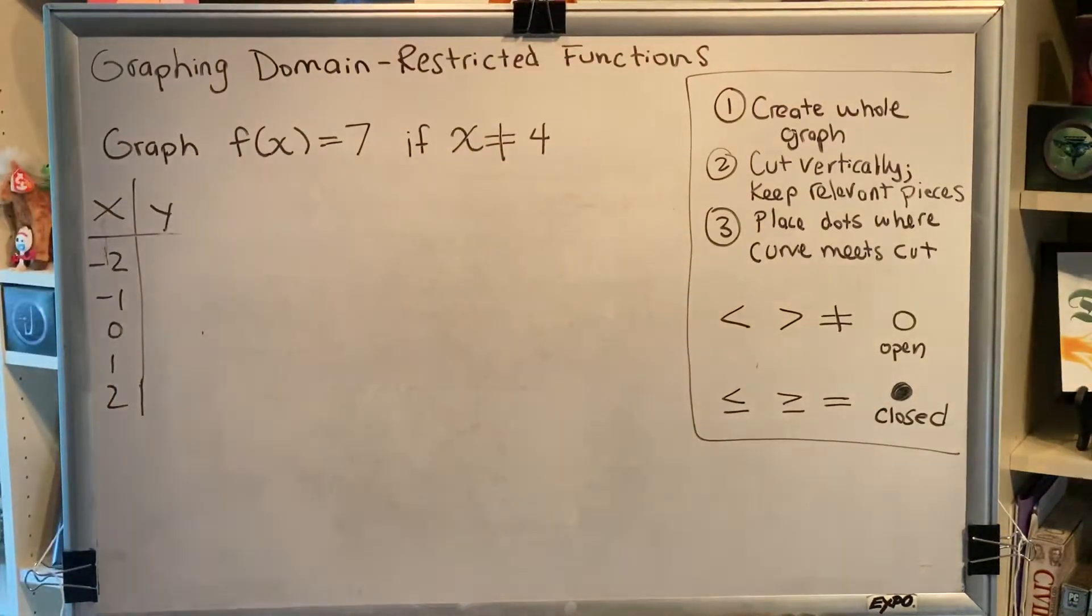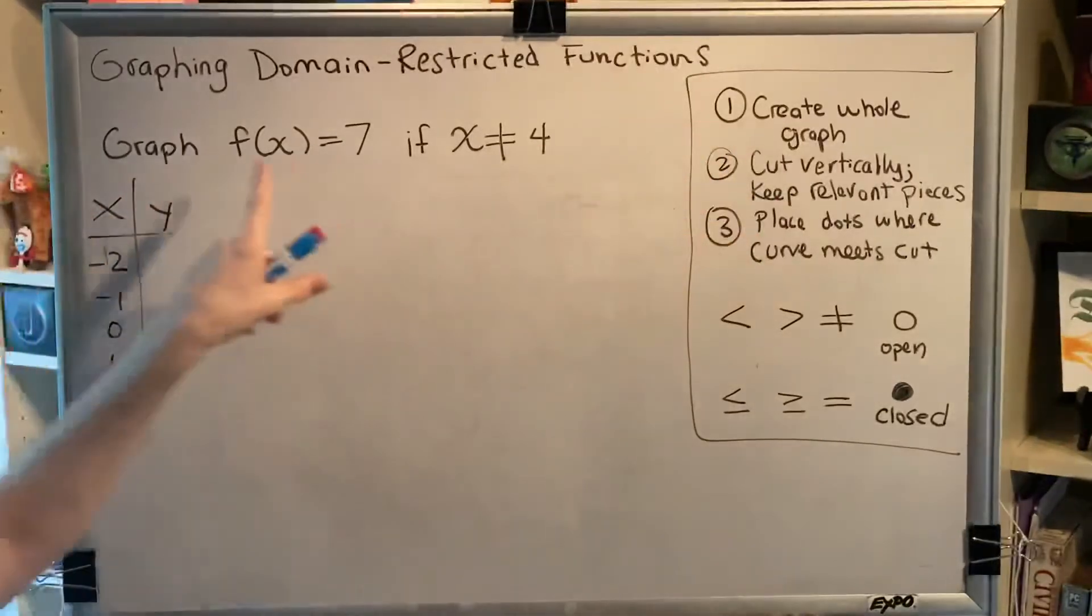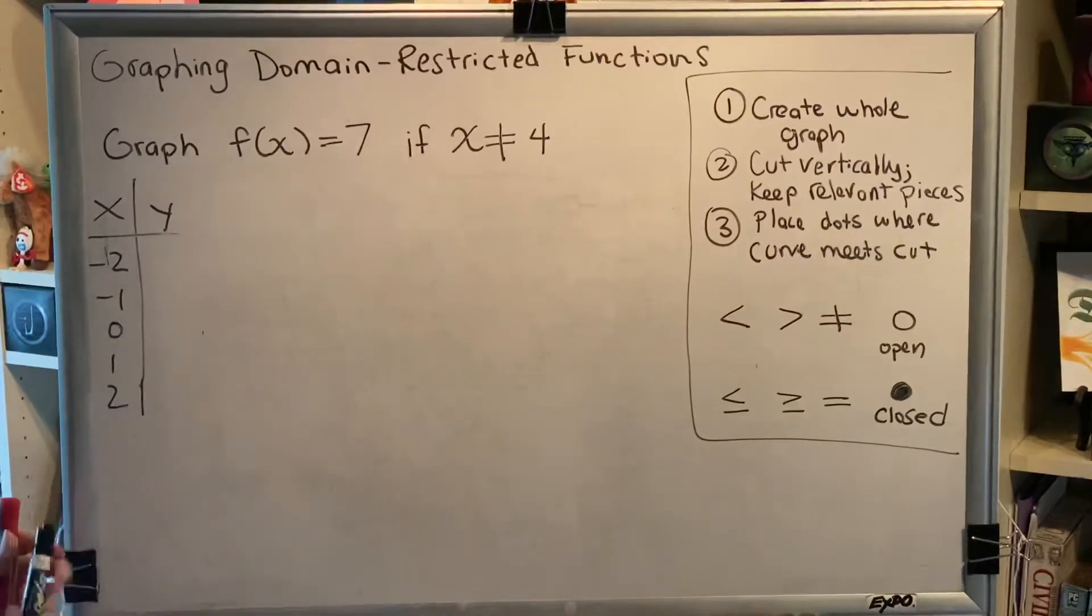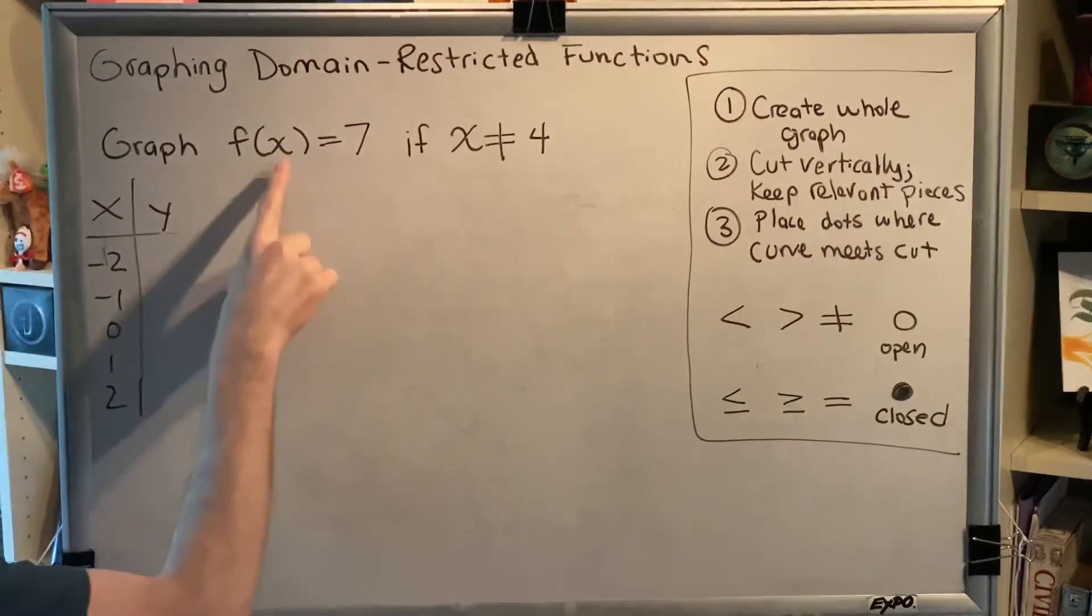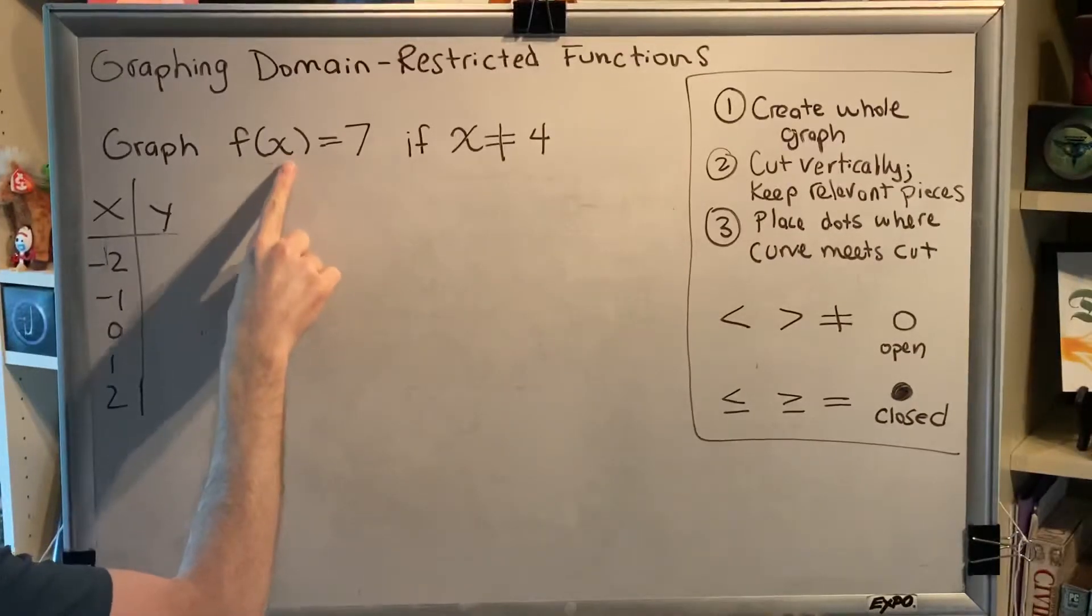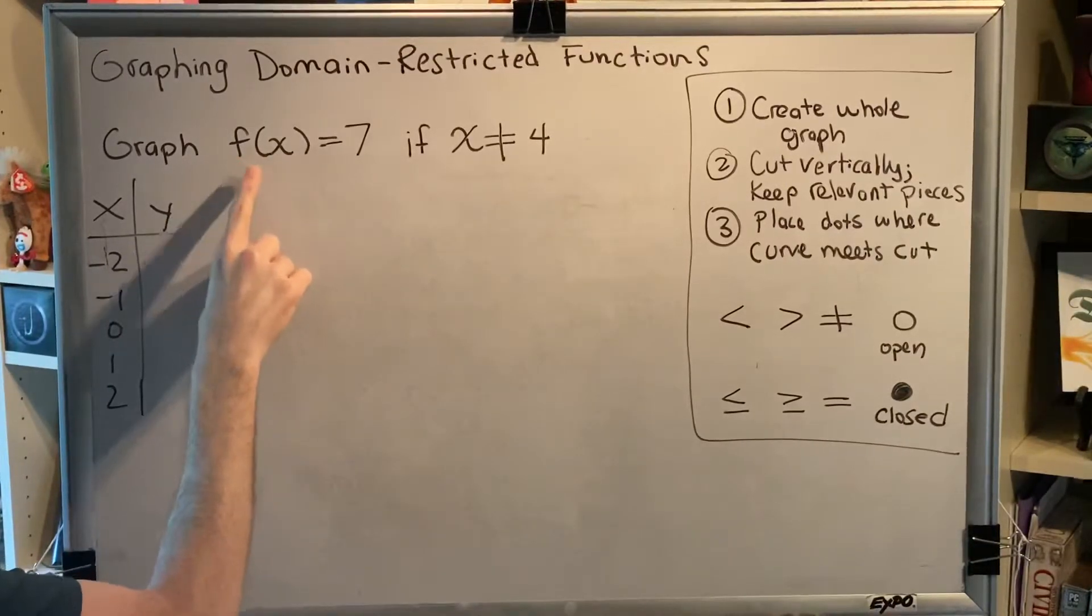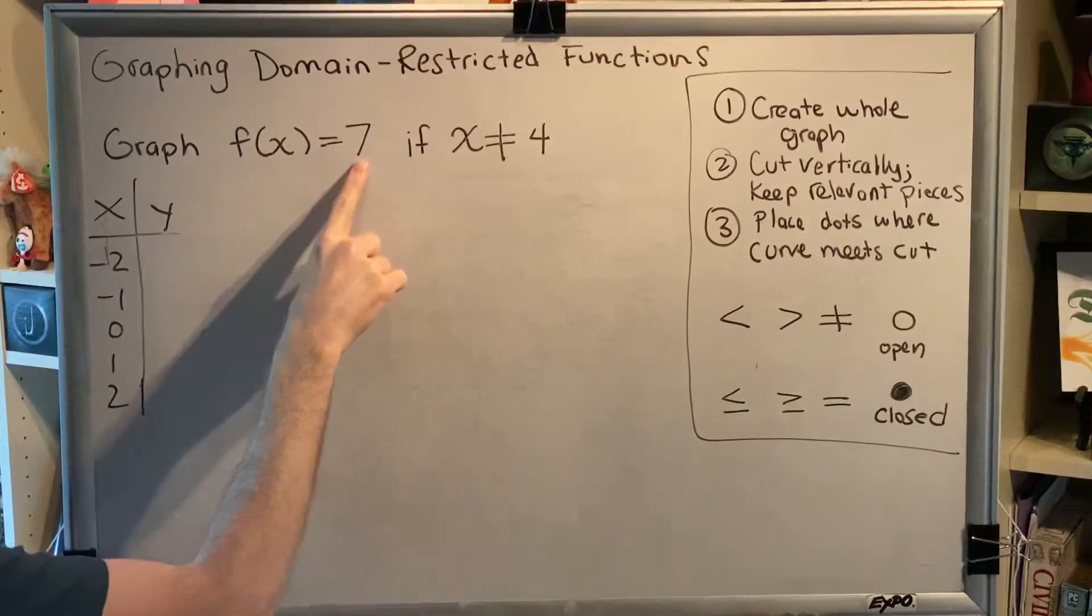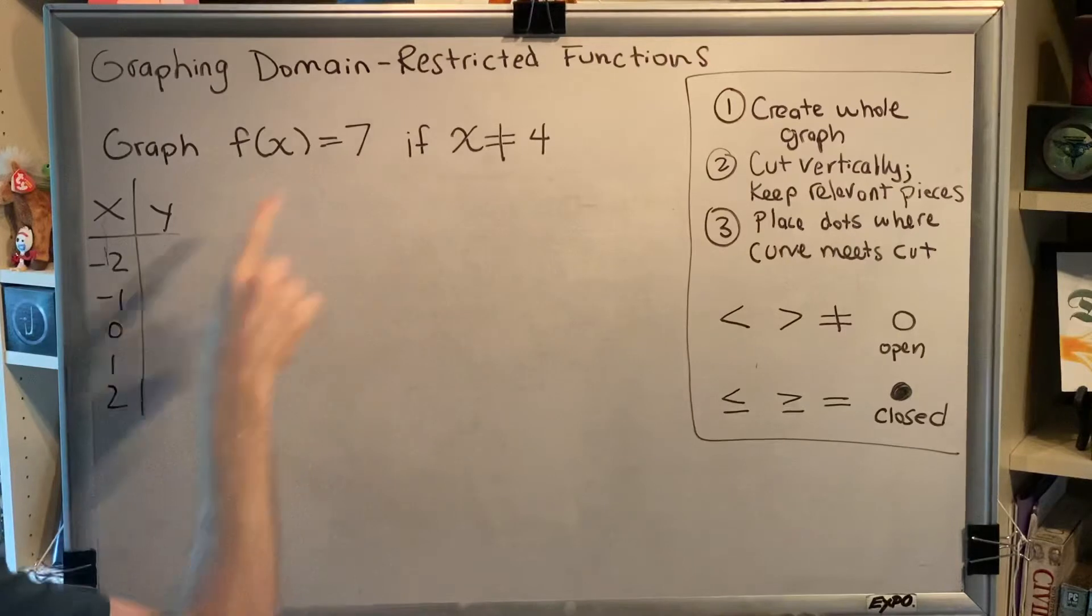Let's go through the steps. The first thing is to create the whole graph of f(x) equals 7. This is our constant function. The constant function says when an input x is put into a machine named f, the output is always 7. It doesn't matter what x is.